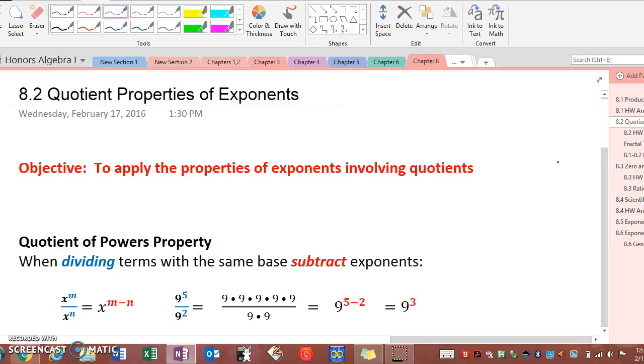Prior to this we learned about the product properties of exponents, and we learned that if two terms have the same base and they're multiplied together, then we can add their exponents to simplify.